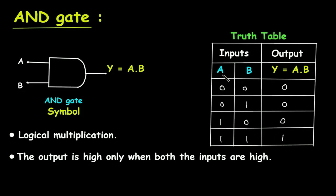When the inputs are 0 and 0, the output is 0. When the input is 0 and 1, the output is 0. When the input is 1 and 0, the output is also 0. The AND gate performs logical multiplication, therefore Y is equal to A dot B. So 1×1=1, 1×0=0, 0×1=0, and 0×0=0.